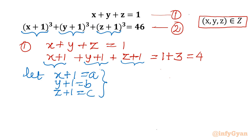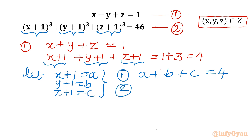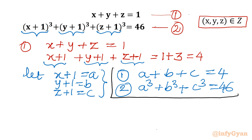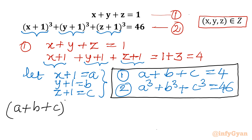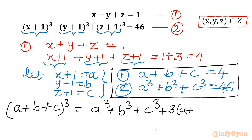By considering this substitution, equation 1 becomes a plus b plus c equal to 4, and equation 2 becomes a cube plus b cube plus c cube equal to 46. Now we have to solve this new system. I will use one algebraic formula: a plus b plus c whole cube equals a cube plus b cube plus c cube plus 3 times a plus b times b plus c times c plus a.